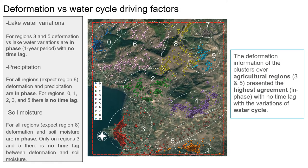Lake water variation, precipitation, and soil moisture can be considered as driving factors related to water cycle dynamics. We can conclude that over regions 3 and 5, ground deformation presented the highest agreement — in-phase and with no time lags — with the water cycle dynamics.